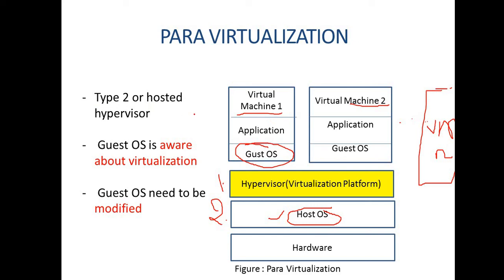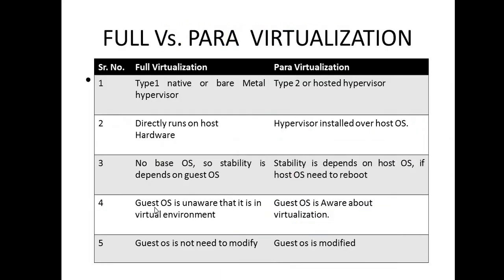So in para virtualization, the guest OS is aware of the virtualization and needs to be modified. This type is known as a Type 2 or hosted hypervisor. For exam purposes, I have summarized everything discussed in a tabular format so you can clearly present the differences between full virtualization and para virtualization.